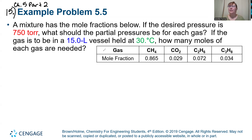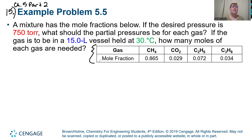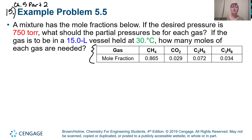It tells us that a mixture has the mole fractions given below — you'll have to write that down on your sheet. If the desired pressure is 750 torr, what should the partial pressure be for each gas? Each gas will be held in a 15-liter vessel at 30 degrees Celsius. We also want to know what the moles of each substance are going to be needed for that.